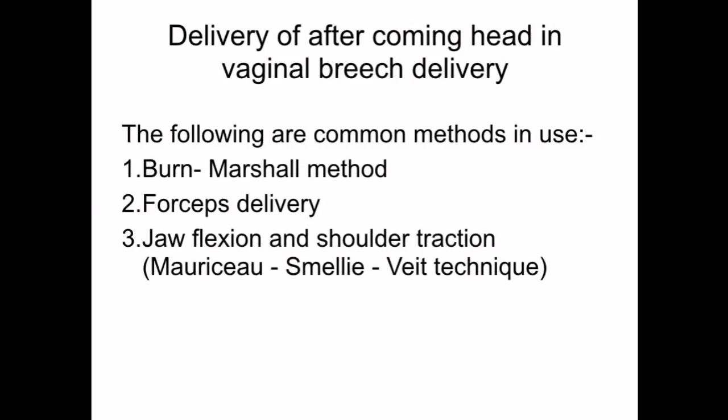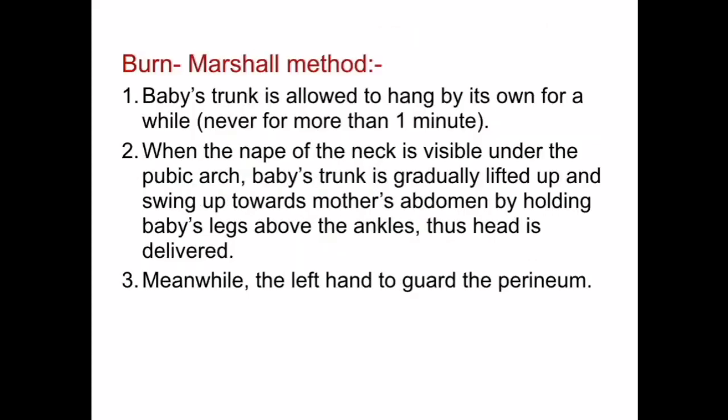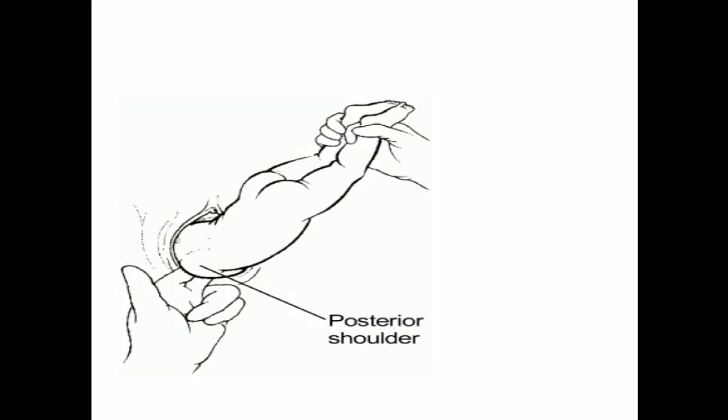For delivery of the after-coming head in vaginal breech delivery, the first common method is the Burns-Marshall method. The baby's trunk is allowed to hang for a while — never for more than one minute. When the nape of the neck is visible under the pubic arch, the baby's trunk is gradually lifted and swung up towards the mother's abdomen by holding the baby's legs above the ankles, thus delivering the head. The left hand guards the perineum.